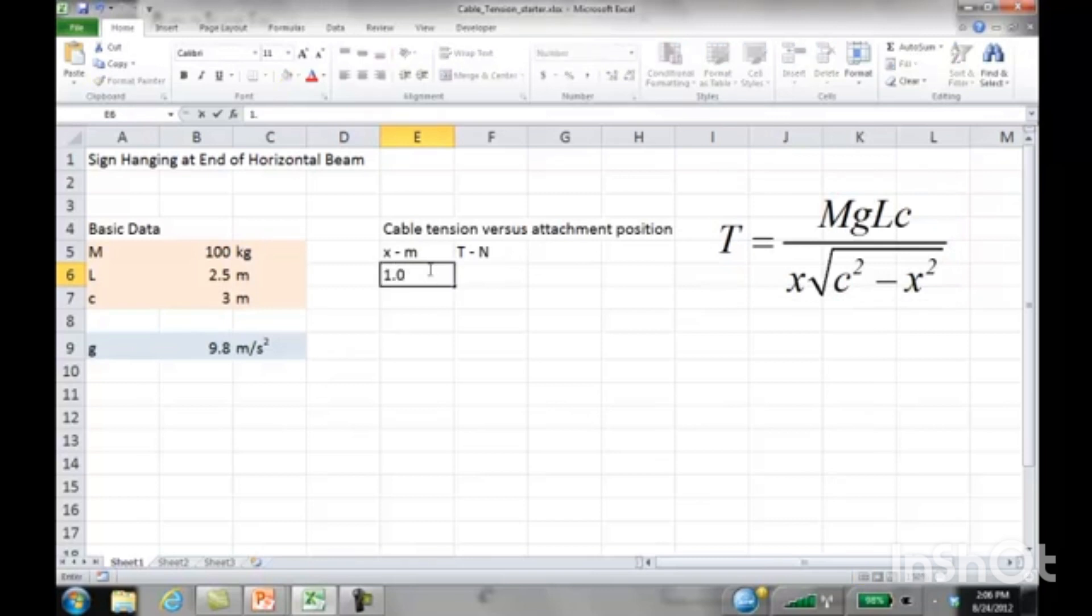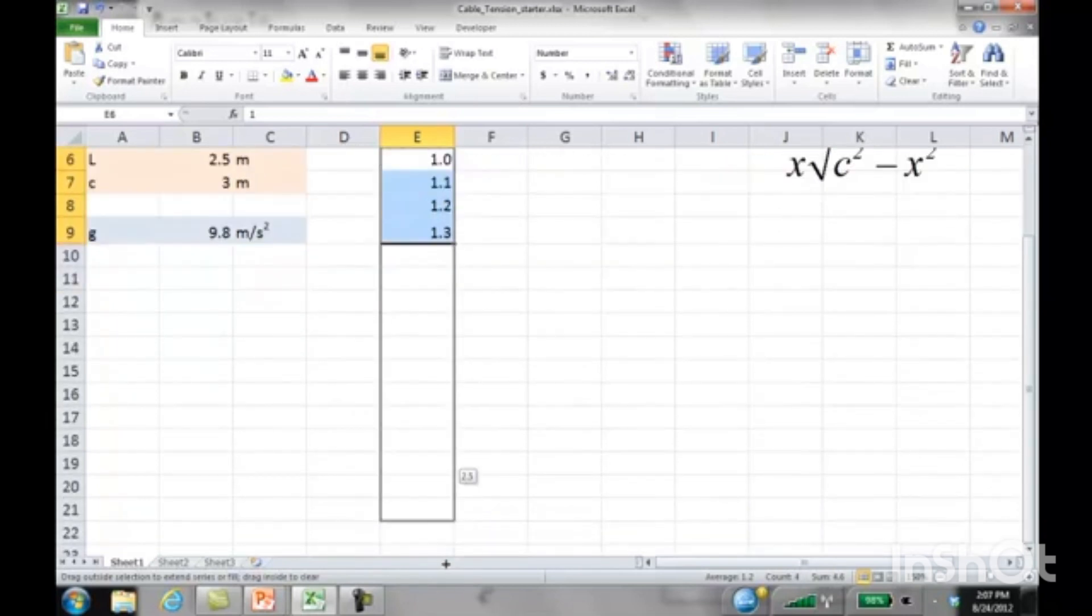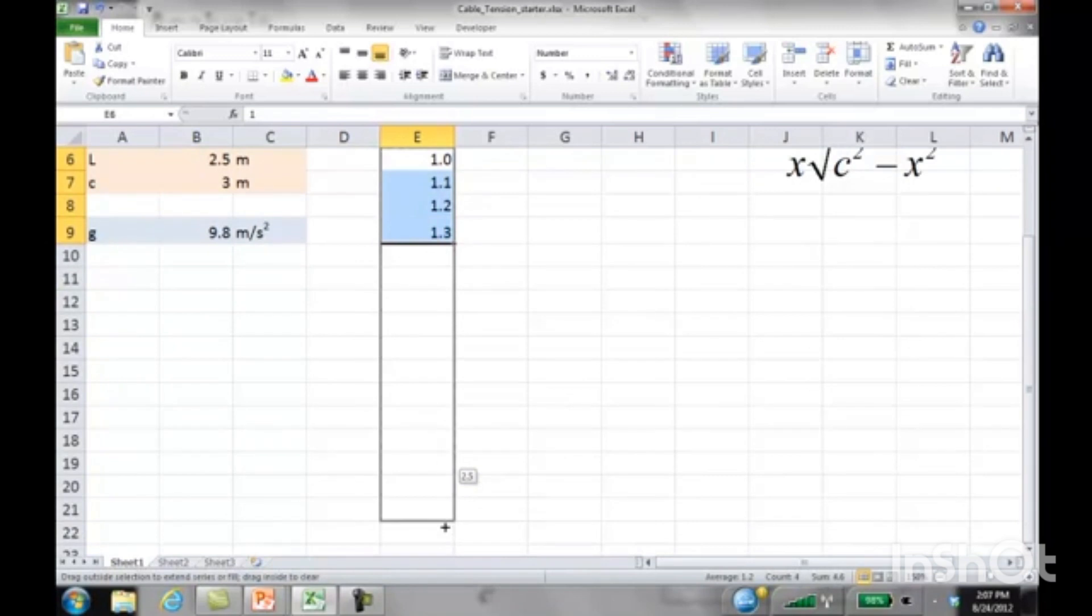I'm going to vary the cable attachment position from 1 meter in increments of 0.1 all the way up to 2.5 meters. There's a much easier way to do this in Excel. You can just highlight two or more cells that are in constant increments, go to the very lower right corner where there's that plus, and then drag. I'm holding down the mouse button as I'm going down all the way to 2.5.